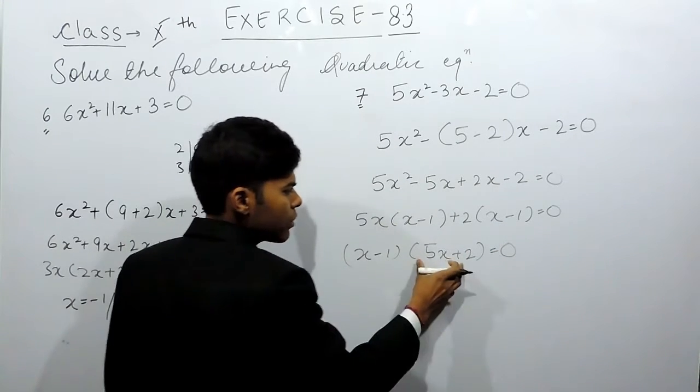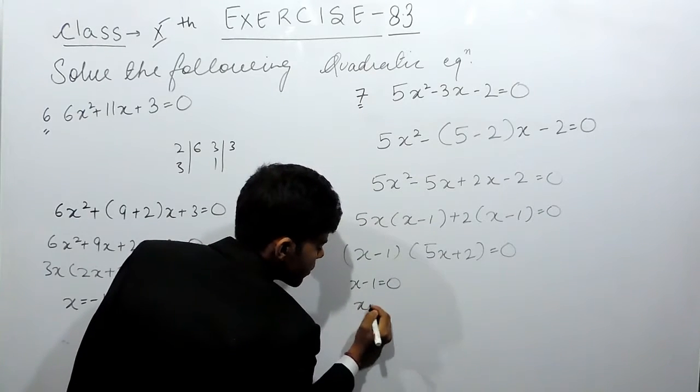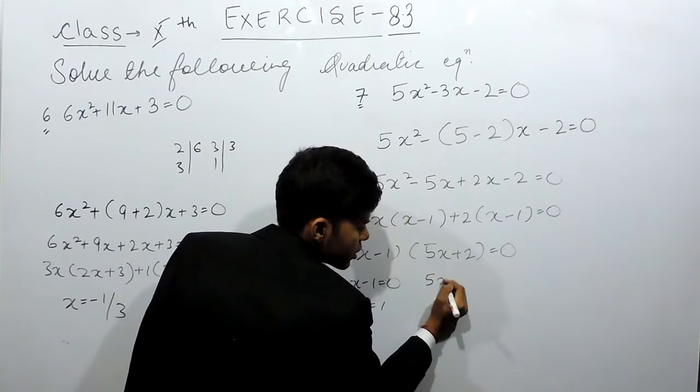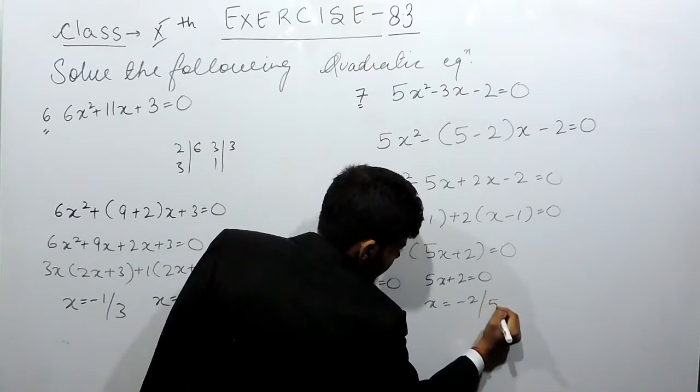Now we will put these values equals to 0. So x - 1 = 0, x = 1. And 5x + 2 = 0, x = minus 2 by 5.